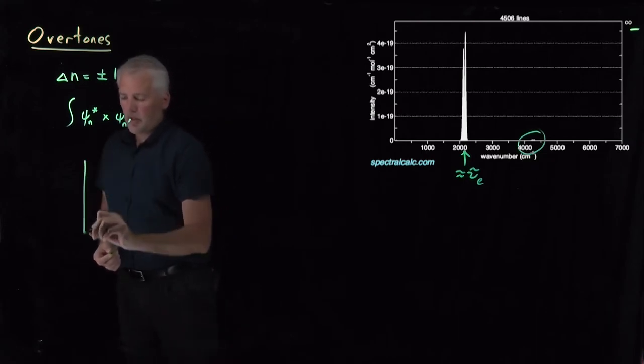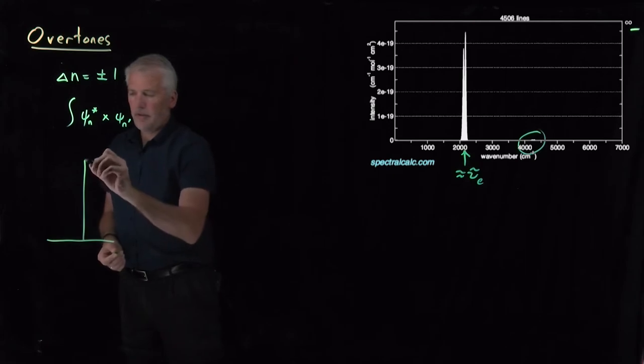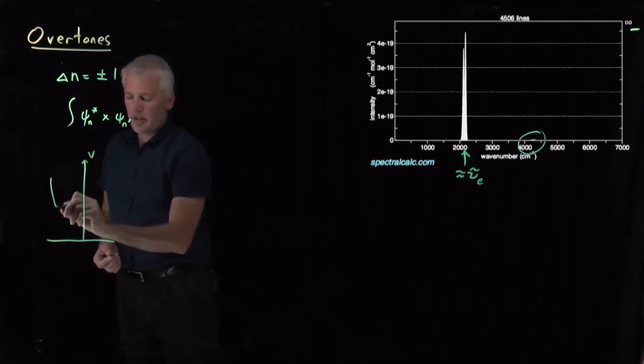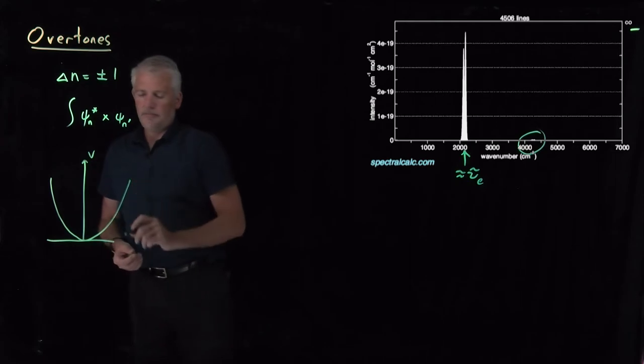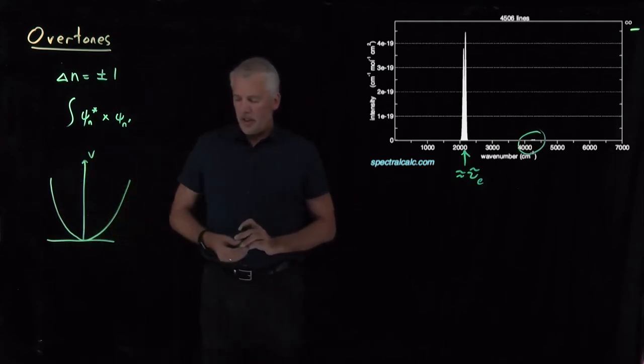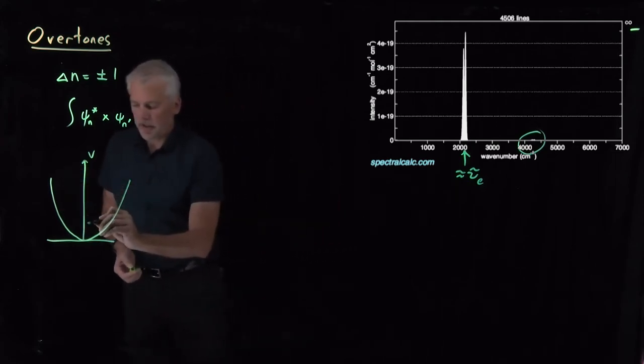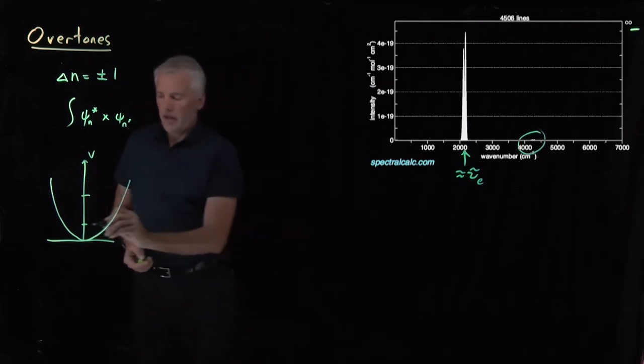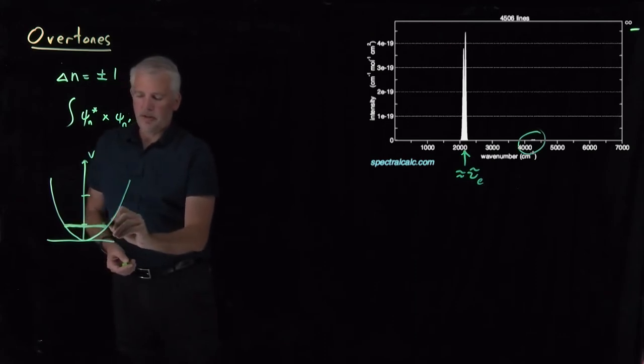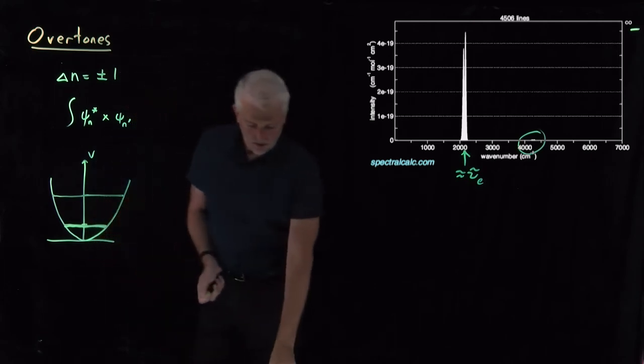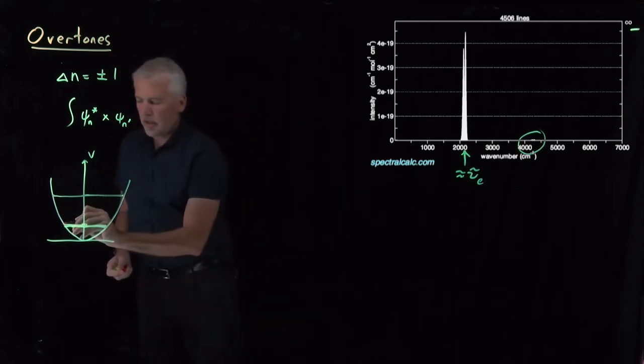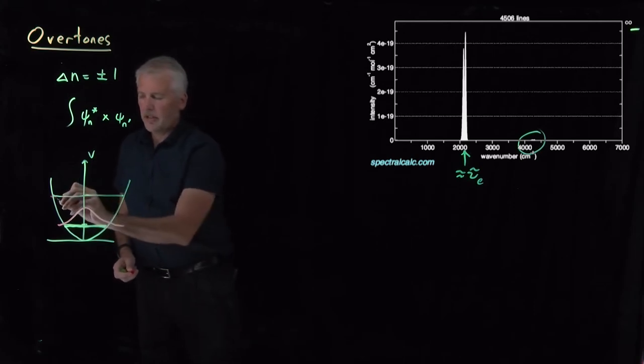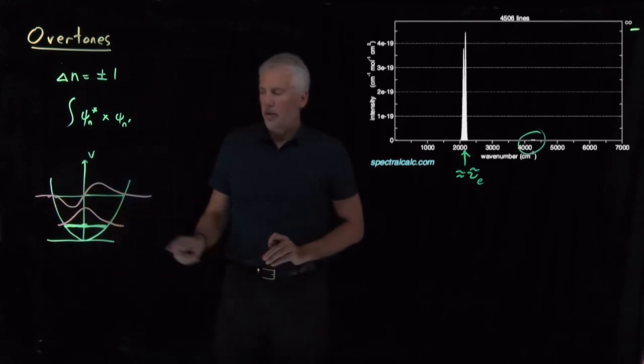So if I draw a graph of the potential energy of a harmonic oscillator. A symmetric parabolic potential. The energy levels that show up at one-half h nu, or three-halves h nu, or five-halves h nu, and so on. The wave functions that occupy those energy levels have shapes that look like, I'll draw the wave functions in a different color. The ground state wave function looks like a Gaussian. The next wave function up looks like this Gaussian with a node in the middle of it.